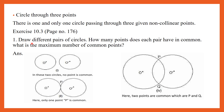Question number 1: Draw different pairs of circles. How many points does each pair have in common? What is the maximum number of common points? In the first figure, the two circles have no points in common. In the second case, the two circles intersect at point P, so there is only one point in common. In case 3, when the two circles are drawn, there are two points in common.